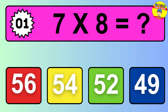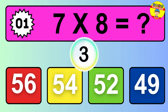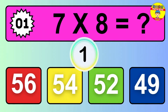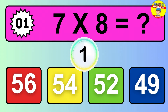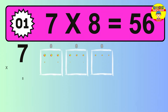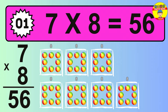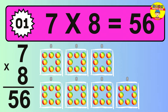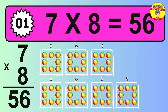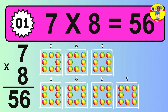Question 1. 7 times 8 equals what? The answer is 7 times 8 is 56. To calculate, we have 7 groups with 8 balls each one. So, how many balls do we have? 56 balls.